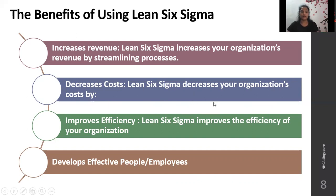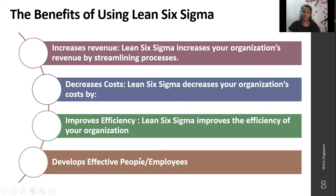Improving efficiency: Lean Six Sigma improves the efficiency of the organization. By using only skilled and qualified employees, it ensures that the products and services you provide are efficient and cost-effective. It develops effective people and employees. When Lean Six Sigma is in place, you are hiring people who are only skilled and qualified. These are the benefits of using Lean Six Sigma.